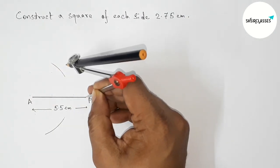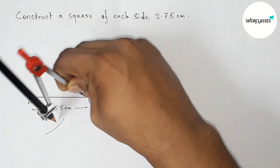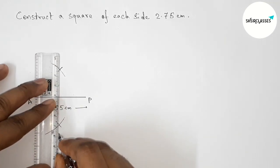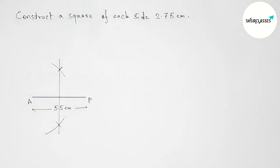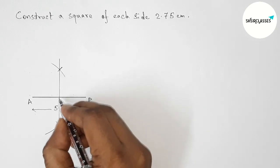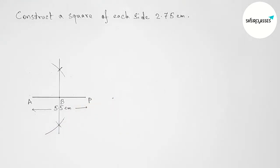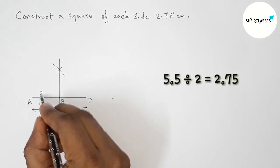Again with the same length, putting the compass here and cut here and cut here. So now joining this, which bisects the line AP perpendicularly at a point. So taking here point B.